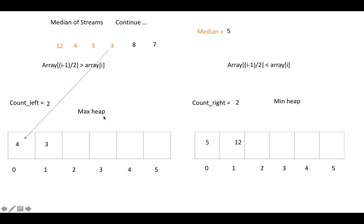The user again asks for the median. We take the root element of the min heap, the root element of the max heap, and compute their average — because count_left and count_right are now the same. The result is (4 + 5) / 2.